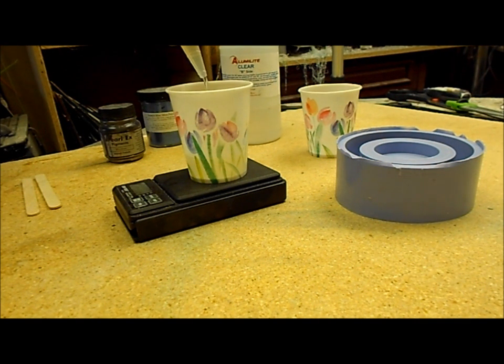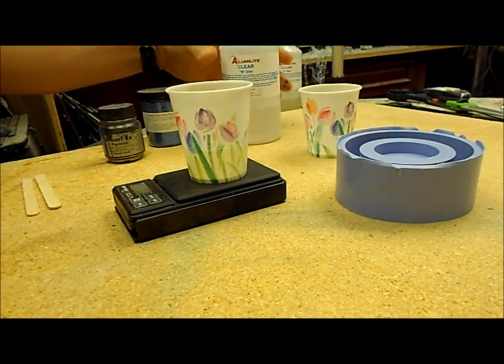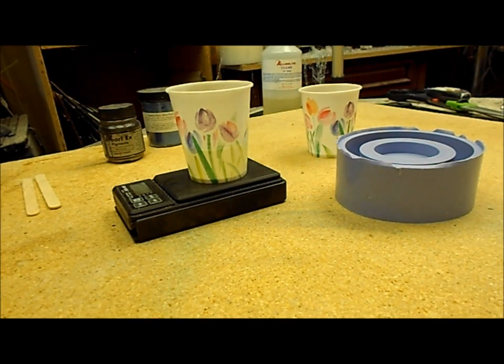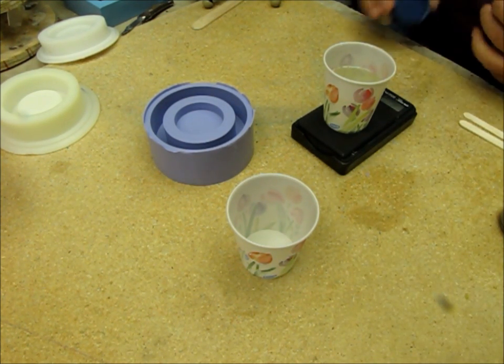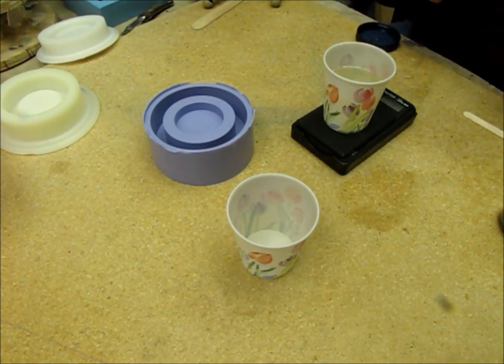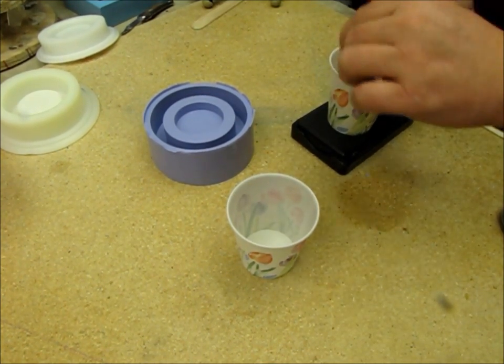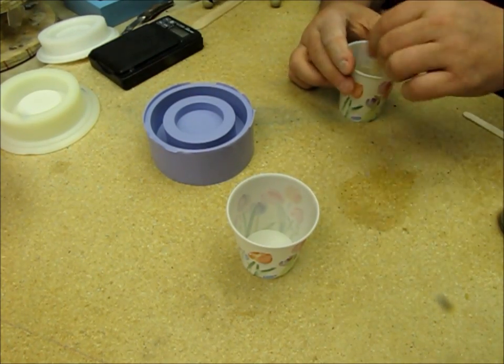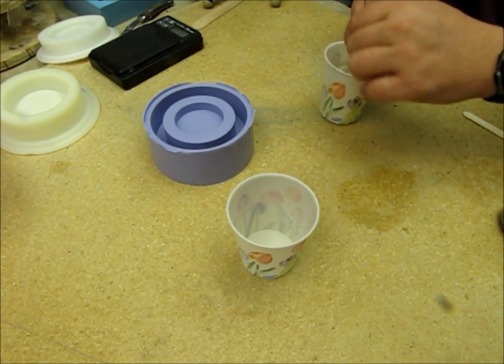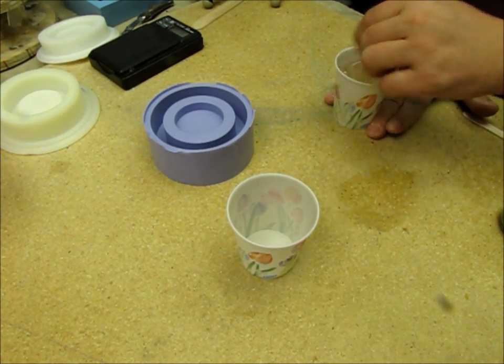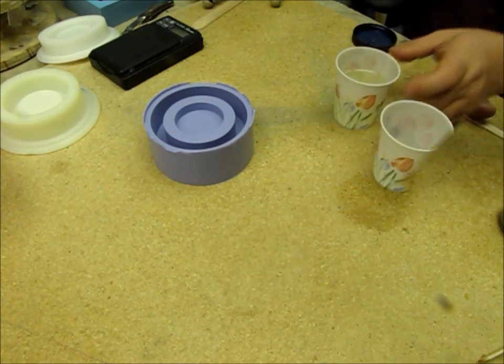I'm going to pour about an ounce and a half to give me a total of three ounces. Okay. One to one equal parts. Okay. Mixed it all together. Let's get that scale out of the way. And then I'm going to split it in half. Why don't I just get a nice mixing of it? I'm going to split it in half here.